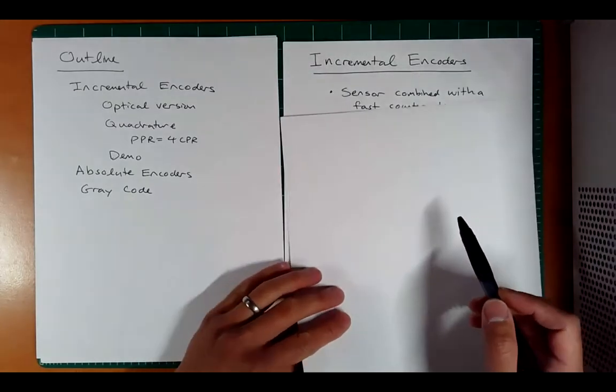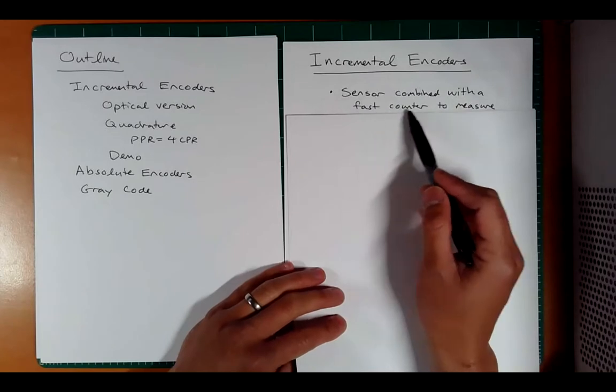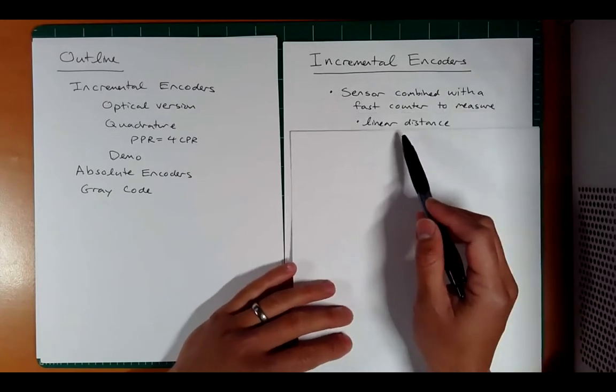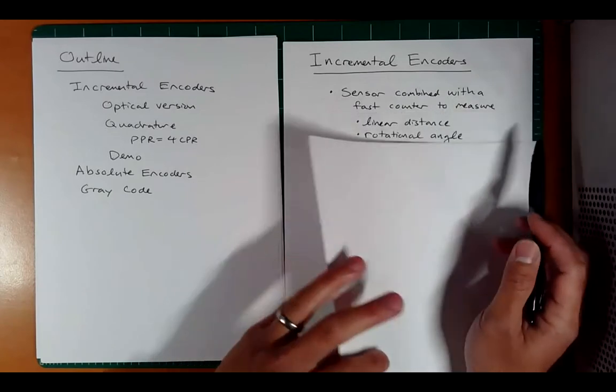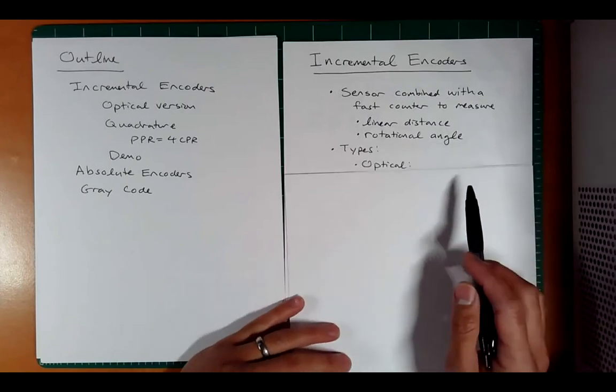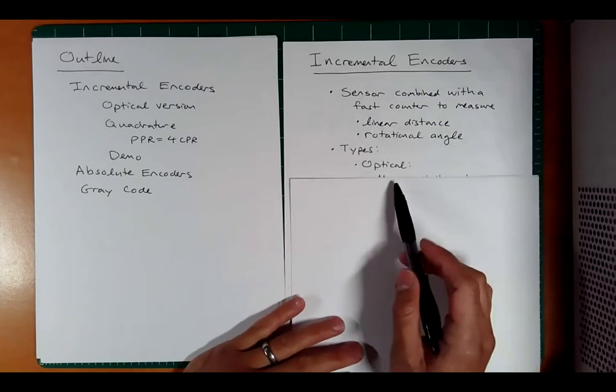So first of all, what is an incremental encoder? Well, it's a sensor combined with a fast counter to measure either linear distance or rotational angle. And so there's two big types, two main types.